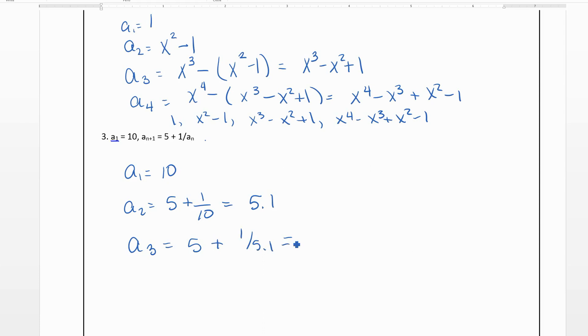Which if we turn into a fraction, it's 265 over 51. 5.1 as a fraction is 51 over 10. And then a₄ would be 5 plus 1 over 265 over 51, which as a fraction would be 1376 over 265.